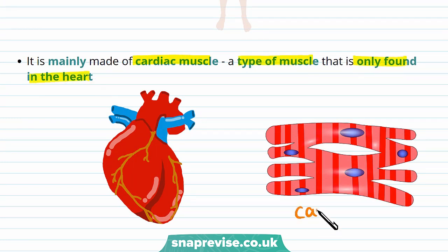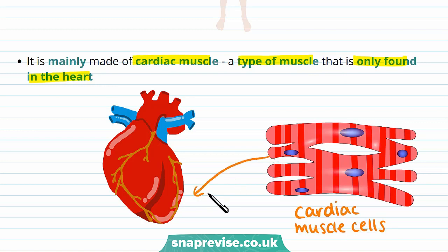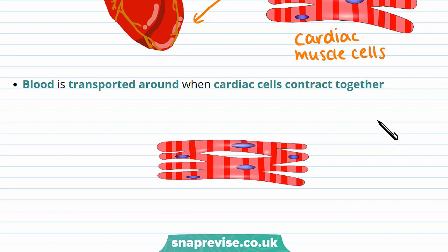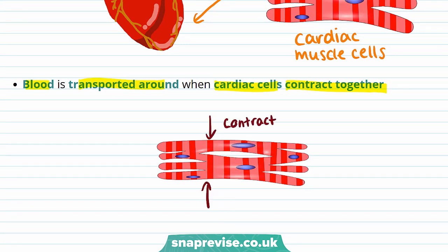These cardiac muscle cells form cardiac tissue, which makes up the organ of the heart. Blood is transported around when cardiac cells contract together, and this happens when the muscle cells shorten. Each contraction leads to a heartbeat, and cardiac muscle cells contract around 70 times a minute, meaning the typical heart beats around 70 times a minute.